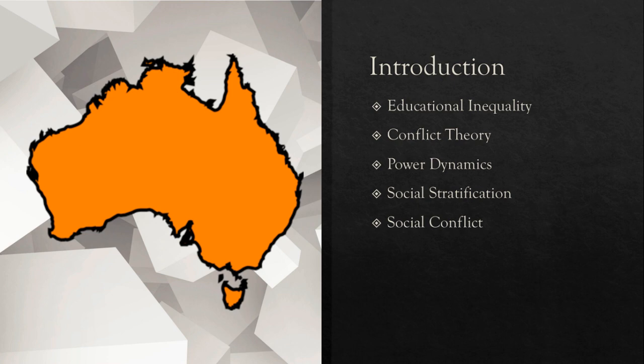The problem of educational inequality may be approached by use of the conflict theory sociological perspective, understanding social class and related concepts as explanations for the social problem at hand. In this presentation, a justification will be provided for the importance of this problem. Conflict theory will be discussed, with elements such as power dynamics, social stratification, and social conflict applied to educational inequality to find and explain the root of this issue.